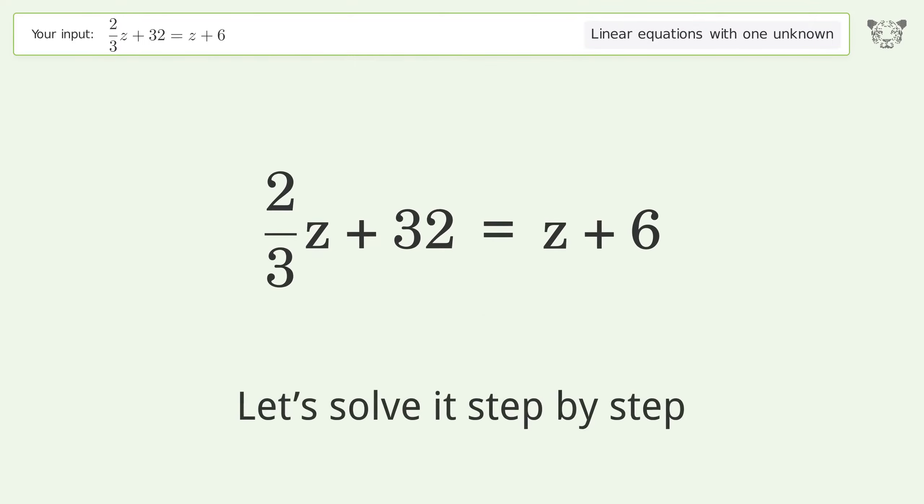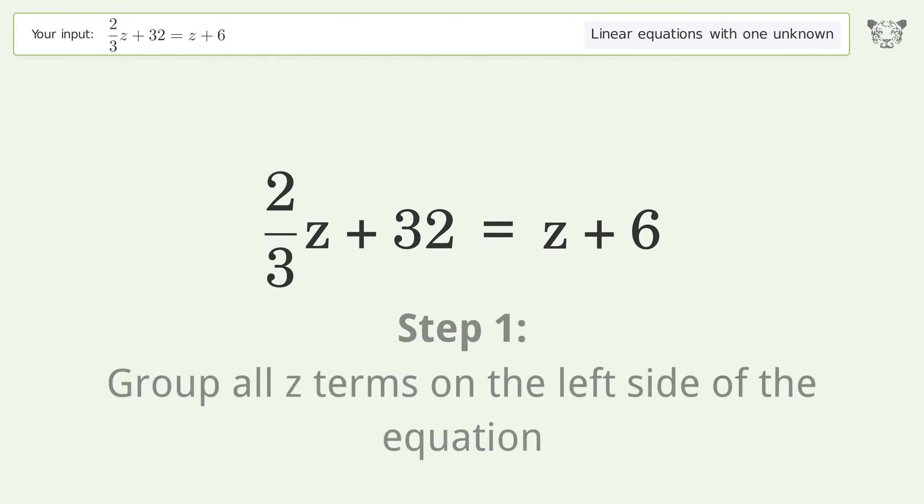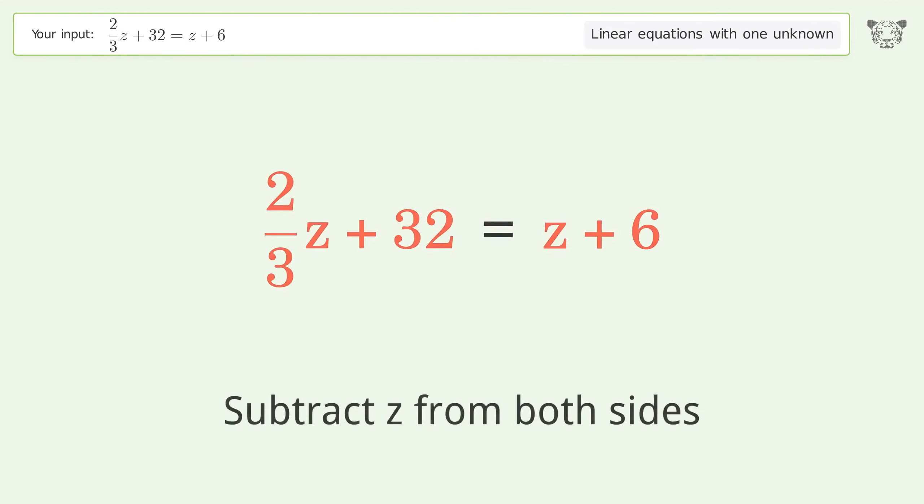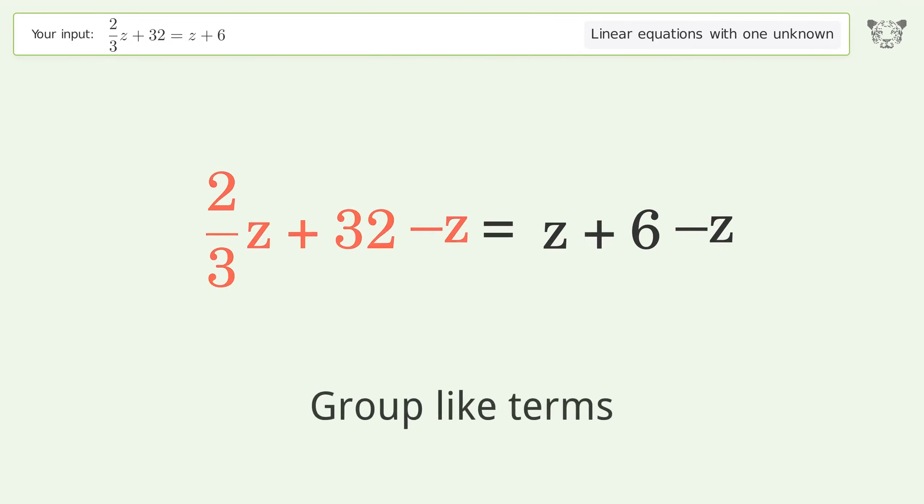Let's solve it step by step. Group all z terms on the left side of the equation. Subtract z from both sides. Group like terms.